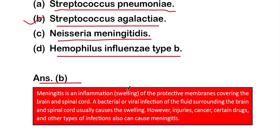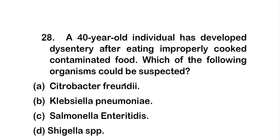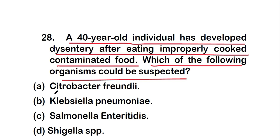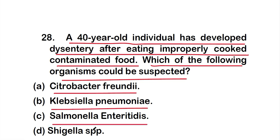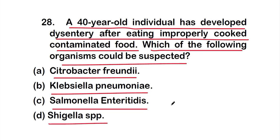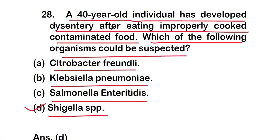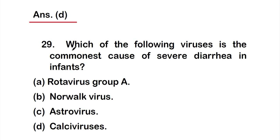Question 28: A 40-year-old individual has developed dysentery after eating improperly cooked contaminated food. Which organism could be suspected? Option A: Citrobacter freundii, option B: Klebsiella pneumoniae, option C: Salmonella enteritidis, or option D: Shigella species. The right answer is option D, Shigella species.